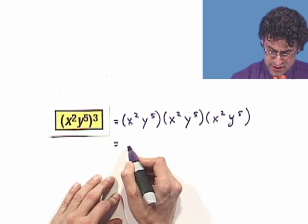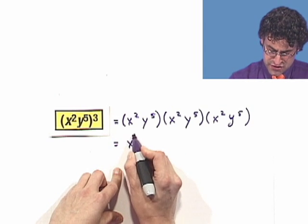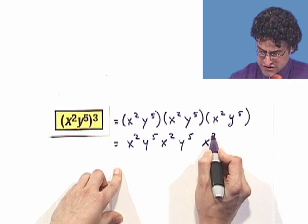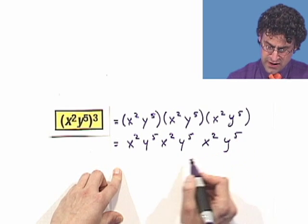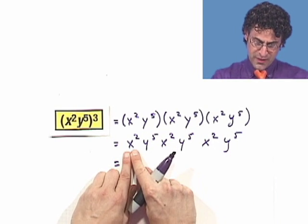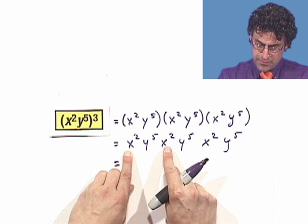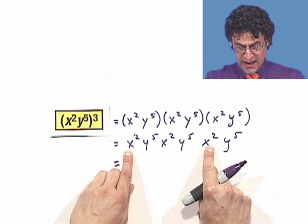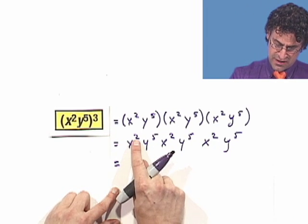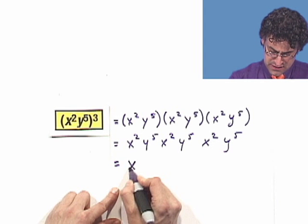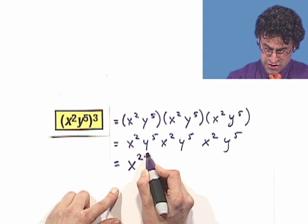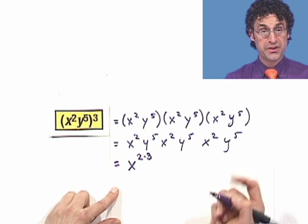And we know what that equals. I've got x squared y to the fifth, x squared y to the fifth, x squared y to the fifth. Since multiplication is commutative, I can do it in any order I want. I'm going to take the x squared multiplied by this x squared multiplied by that x squared. We add the exponents, so I see two plus two plus two — that's x to the two plus two plus two, which is actually two times three, because it's two three times.